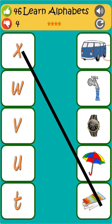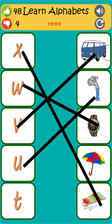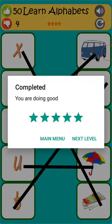X is for xylophone. W is for watch. V is for van. U is for umbrella. T is for tap.